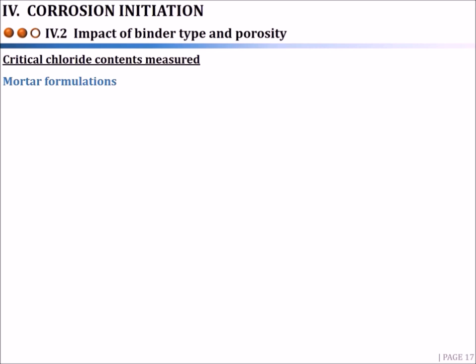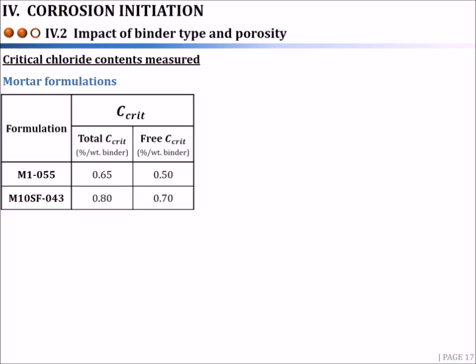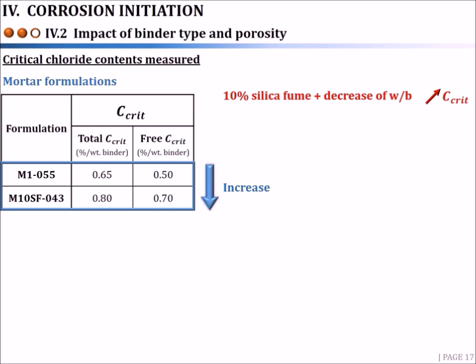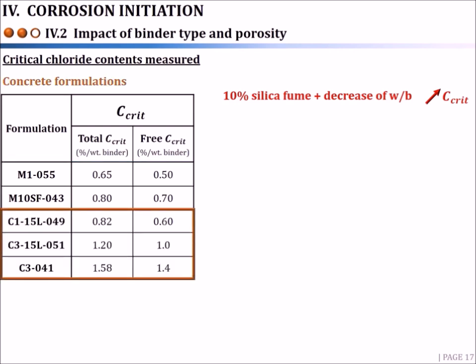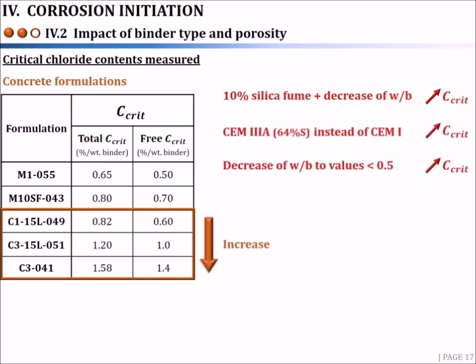This protocol was applied to all formulations and critical chloride contents were determined for each using the same criterion. The results show that critical chloride contents increased when cement was substituted with 10% silica fume, and when the water-to-binder ratio was decreased below 0.5. For concrete specimens, formulations made with CEM3 containing 64% slag presented higher critical chloride content values compared to concrete made with CEM1. The decrease of the water-to-binder ratio below 0.5 also induces an increase of Ccrit values.